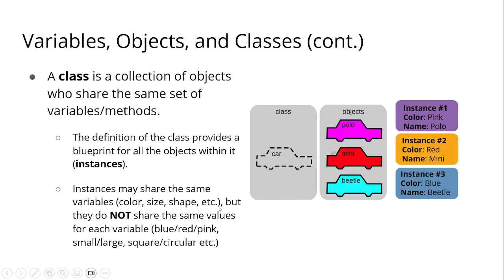Instances may share the same variables — color, shape, size, etc. — but they do not share the same values for each variable: blue, red, and pink. They may have the same variable which is color name, but they have different values. We have pink, red, and blue. And the names are Apollo, Mini, and Beetle.